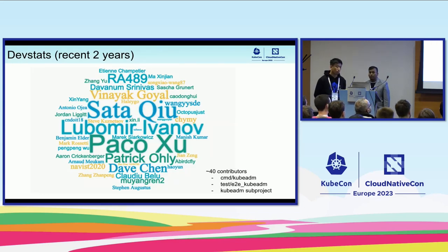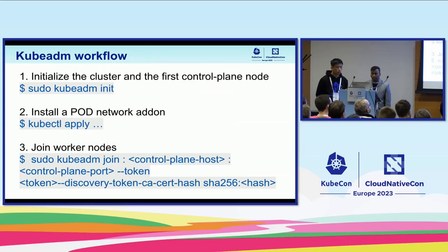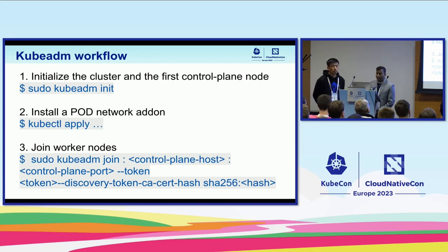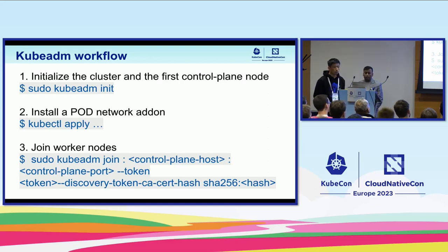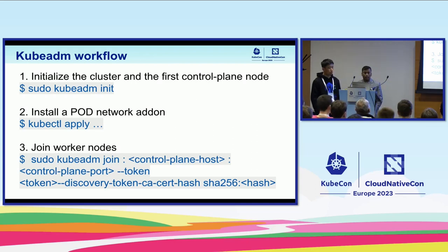We would like to thank all our contributors who have been contributing to kubeadm in the recent two years. Kubeadm is GA now. Without their efforts, it would not have been possible. The basic kubeadm workflow starts with initializing the cluster and the first control plane node. You just need to run a few commands. You run kubeadm init to create the control plane node, and the output of kubeadm init you paste on the worker node to attach it to your cluster. After installing kubeadm and Kubernetes, you apply the CNI — you can apply any CNI like Calico, Weave, Flannel, et cetera. You also need to apply the CNI for your CoreDNS to work.